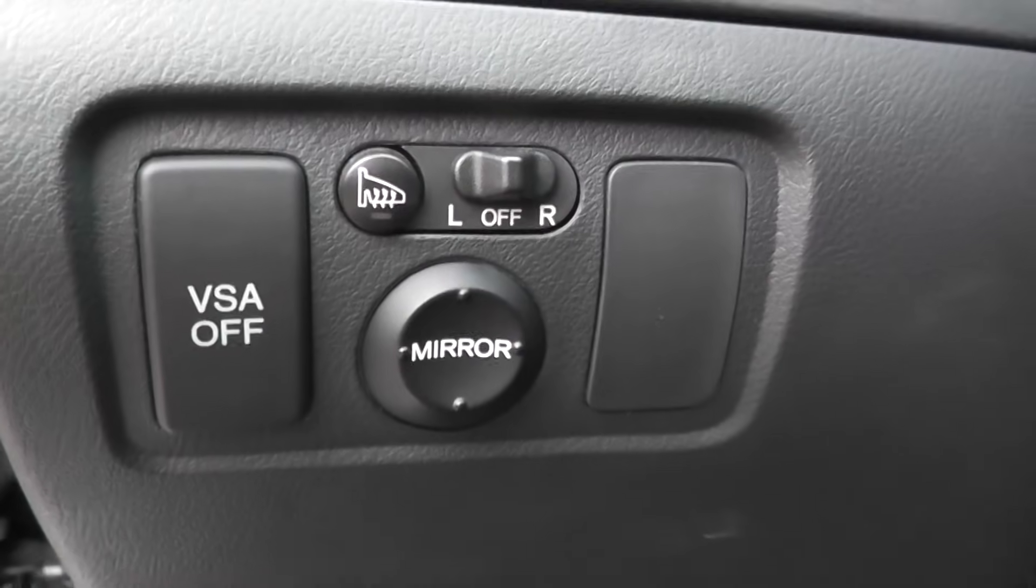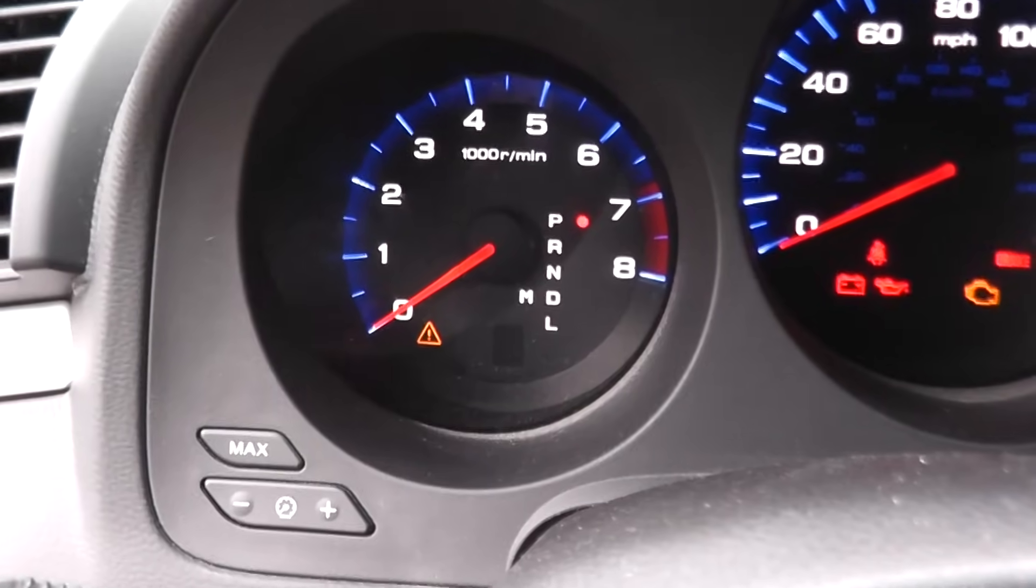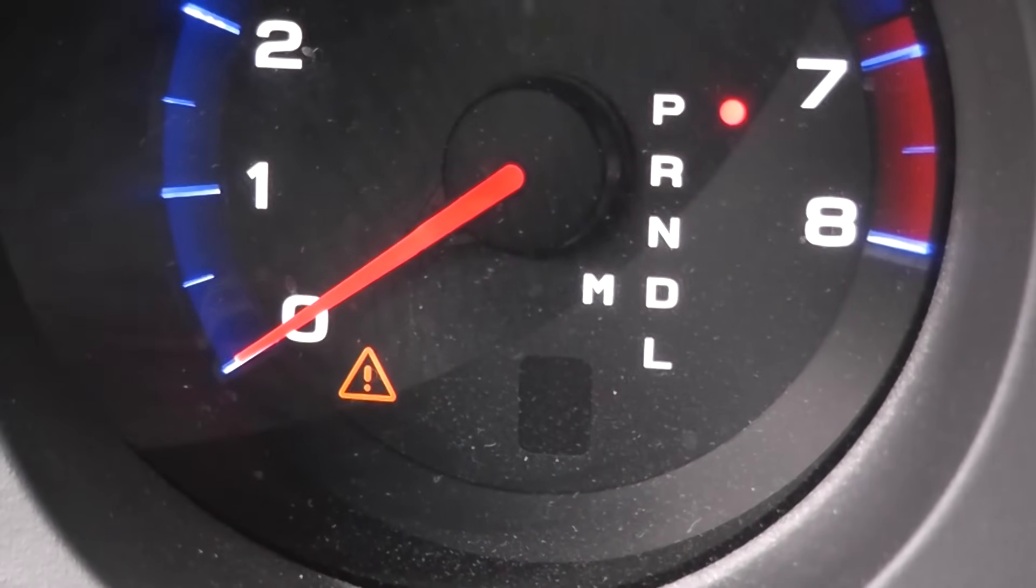Now today we'll be testing this VSA off switch from a 2006 Acura TL. You may want to be doing this because you have the VSA activation symbol, that's the triangle on your dash, and you're pressing this and it's not going off. You may want to test this to see if this is the problem.